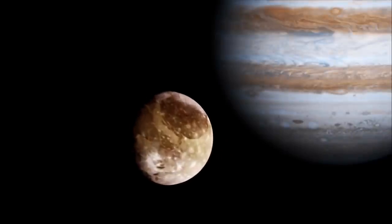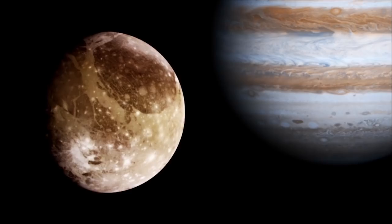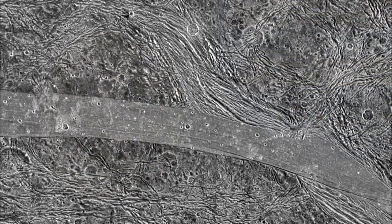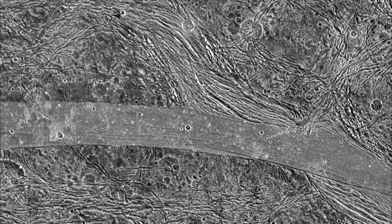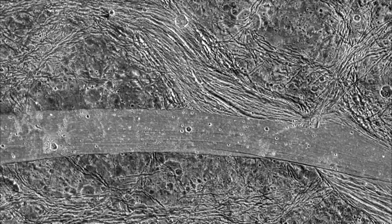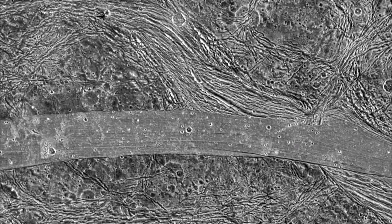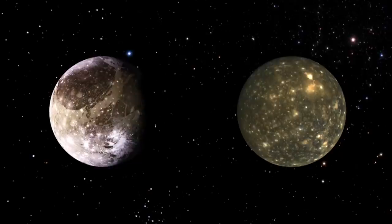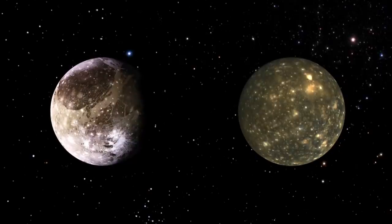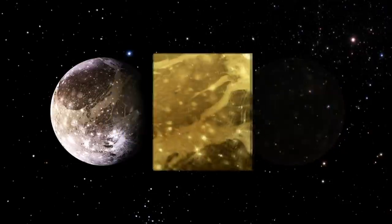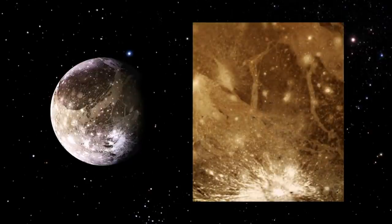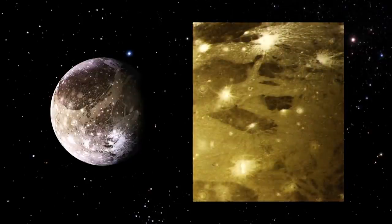Meanwhile on Ganymede we find more obvious signs of a geologically active past. Ganymede is the largest moon in our solar system and one of the strangest looking. Part of its surface is as old as Callisto's, dark and heavily cratered, but the dark areas are fractured by more recent terrain made up of parallel grooves and ridges.